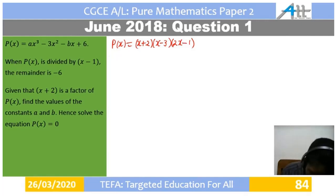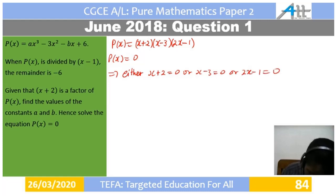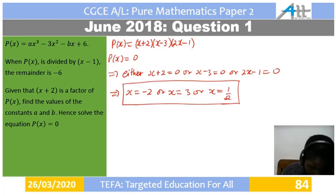So P of x equals 0 implies either x plus 2 equals 0, or x minus 3 equals 0, or 2x minus 1 equals 0. This gives x equals negative 2, or x equals 3, or x equals one half. That is the complete solution of the equation P of x equals 0.